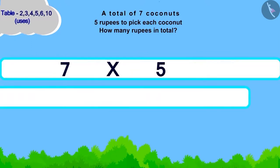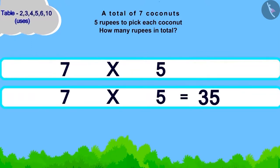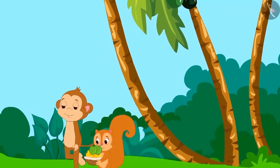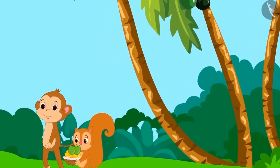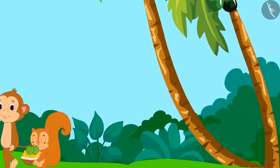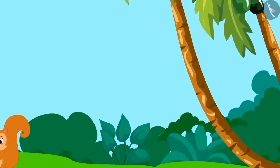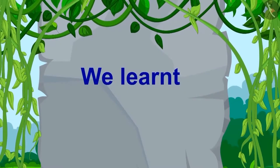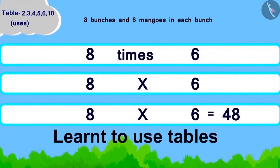Children, you have solved this correctly. Chanda will have to give thirty-five rupees to Babban. Chanda collected the coconuts and gave money to Babban. Now, both of them went to rest under a tree. Children, in this lesson, we learned to use tables.